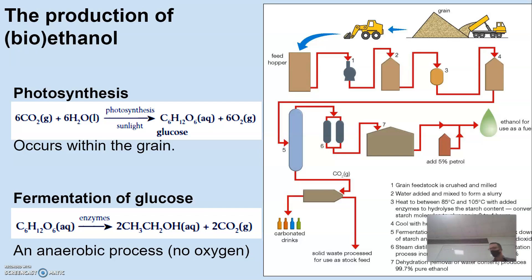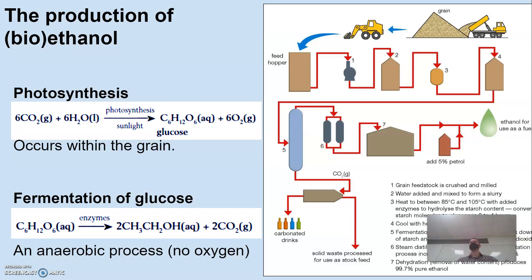We produce ethanol using enzymes. An enzyme is a biological catalyst — it helps speed up biochemical processes. We'll return to enzymes from a digestive perspective in Unit 4. For those doing biology, we look at the key-and-lock model of substrate binding; we do not look at induced fit in this course.